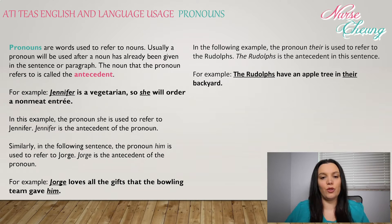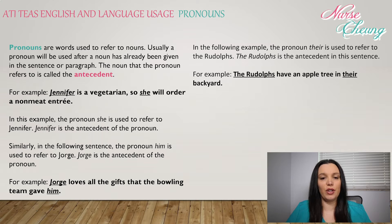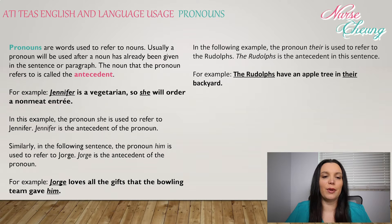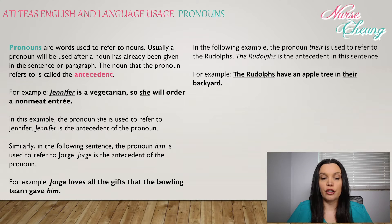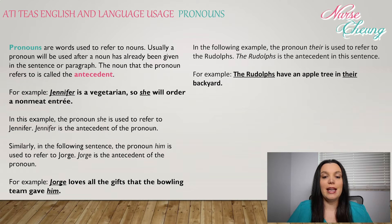Pronouns are words that are used to refer to nouns. Usually a pronoun will be given after a noun has already been given in the sentence or paragraph. The noun that the pronoun refers to is called the antecedent. For example, Jennifer is a vegetarian, so she will order a non-meat entree. In this example, the pronoun 'she' is used to refer to Jennifer. Jennifer is the antecedent to the pronoun.